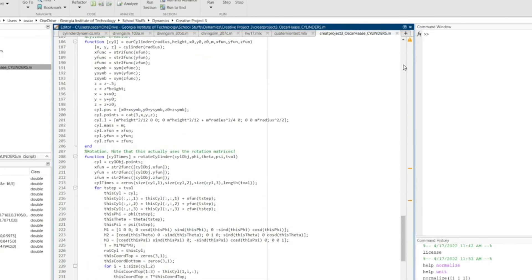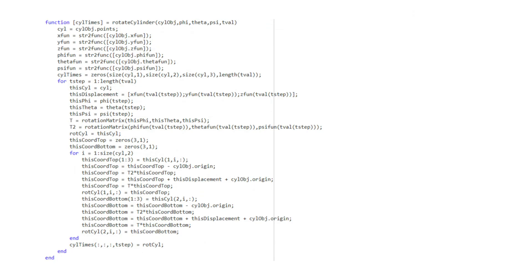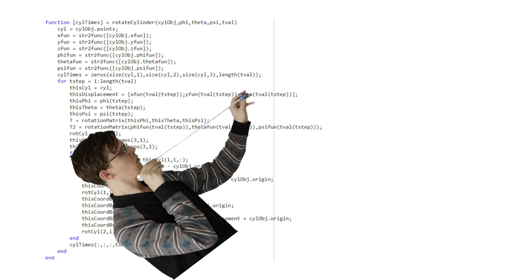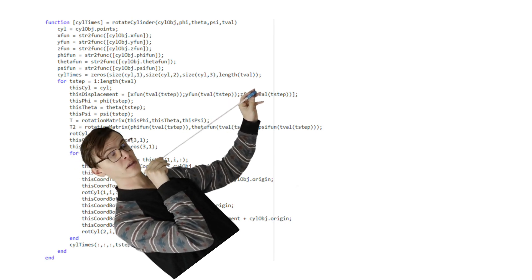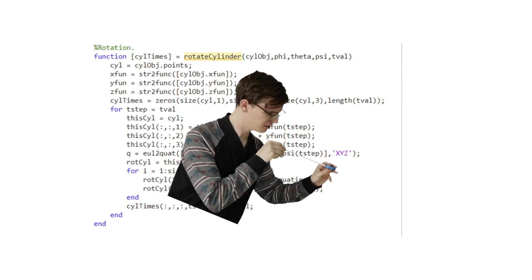Now I could even use this to rewrite some of the code that I made for my cylinder simulation. Here's what it used to be. That's quite big. And here's what it would be using quaternions. That's kind of small.